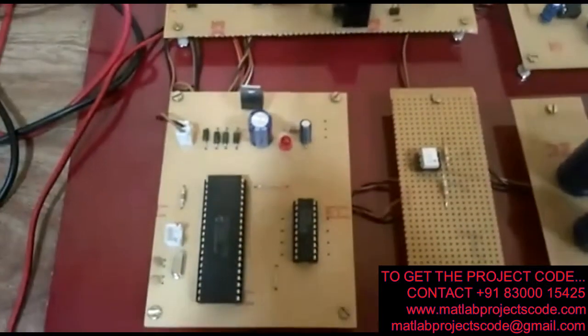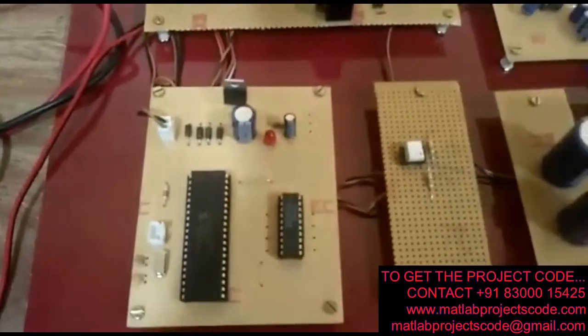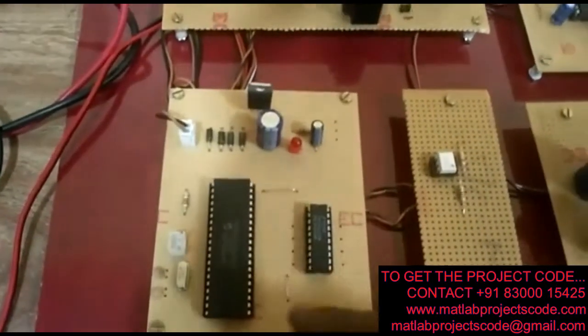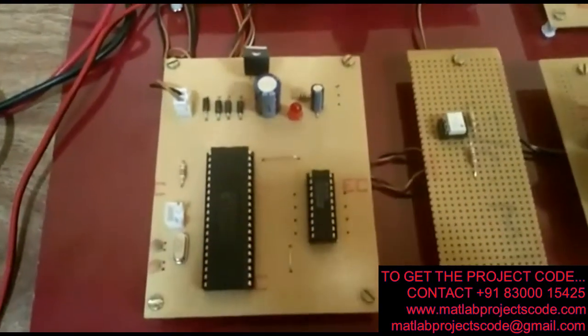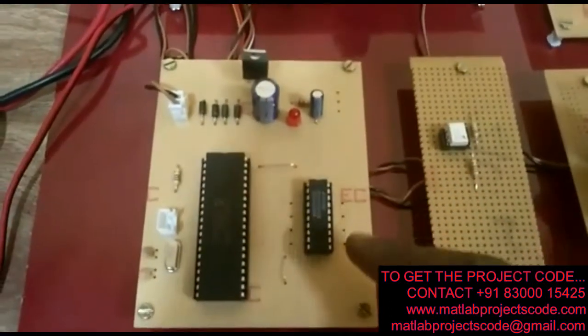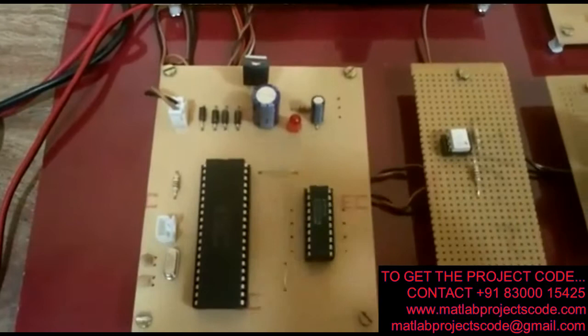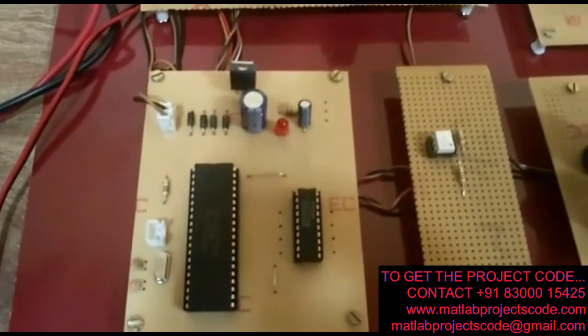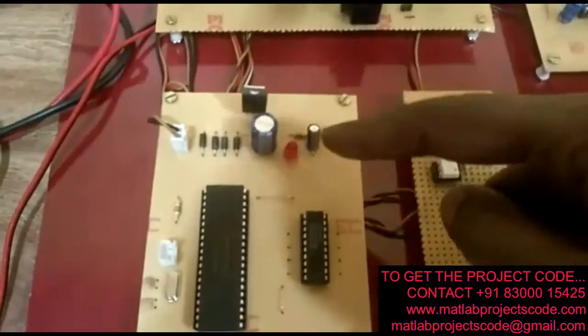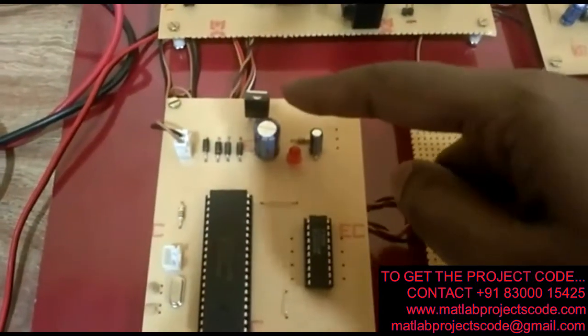This is the microcontroller block. Since the current gain of the microcontroller is less, we are using a buffer to amplify the current. The operating voltage of the microcontroller is 5V. This is provided by using a voltage regulator 7805.